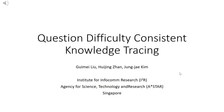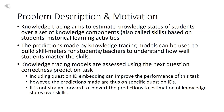Hello, our paper is on knowledge tracing, which is a key component in intelligent tutoring systems to enable adaptive and personalized learning. Knowledge tracing aims to estimate knowledge states of students over a set of knowledge components, also called skills, based on students' historical learning activities.